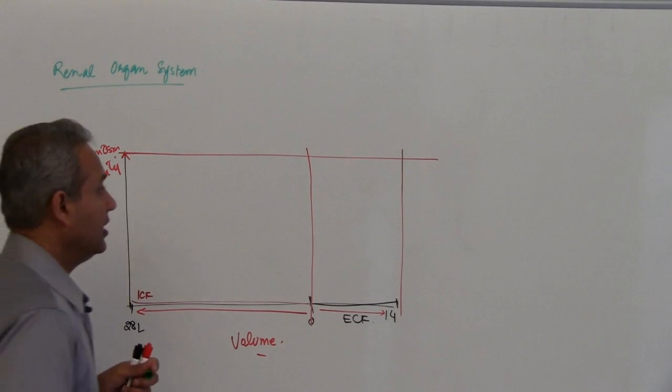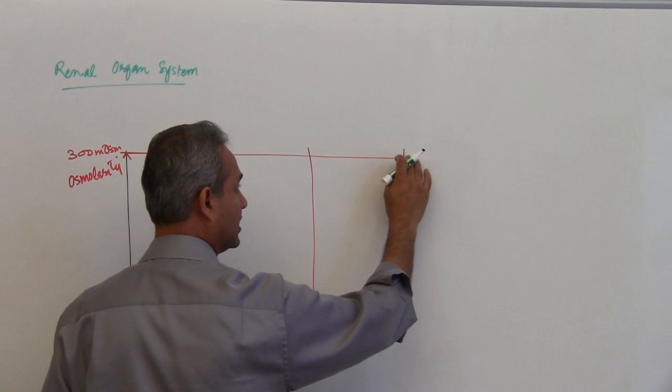So now we know that the normal osmolarity is going to be 280 or 300 milliosmoles. Question is, so I am not making the intravascular compartment for the time being.